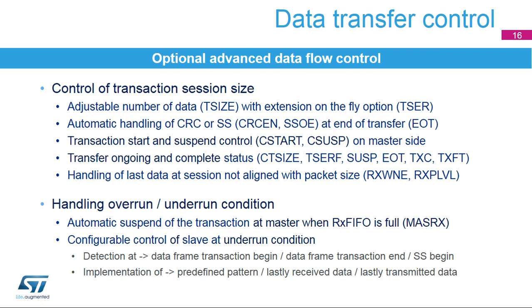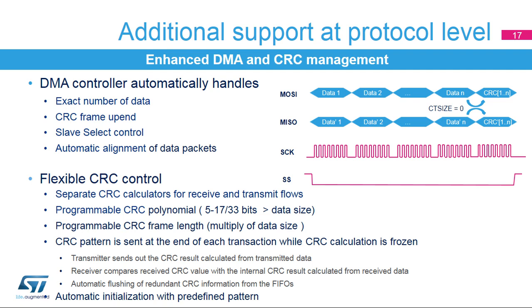To prevent overrun conditions and the loss of any data, the master can temporarily suspend ongoing transactions when its received FIFO is full. The slave can be configured to detect and react to underrun conditions when no data is ready to be sent in its transmit FIFO and when the master continues or starts a new session. During protocol-level communications, the DMA controller can be used to automatically handle the data flow events, the CRC calculations, and the updating of the FIFO threshold. In case of threshold control, the last odd data frame is correctly applied in packed mode when the number of frames is not aligned with the packet size.